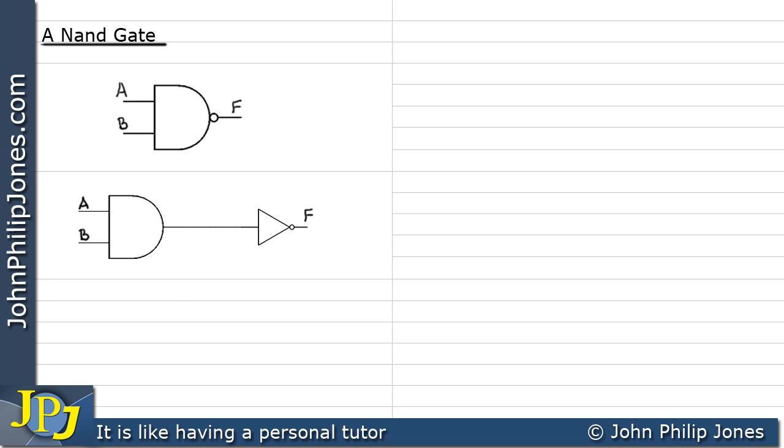If we look at the output of the AND gate, that would be represented as A AND B. Now of course this is the output from the AND gate and this acts as an input to the NOT gate. So what a NOT gate will do, it will NOT whatever its input is. So we can say here that F will be the input to the NOT gate which is the A AND B and all of that will actually be NOTted.